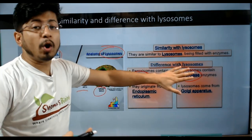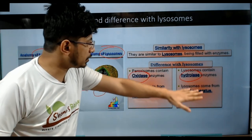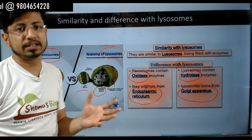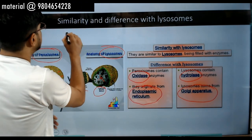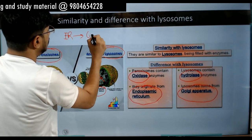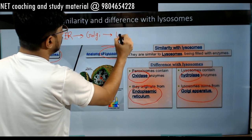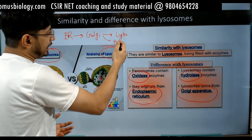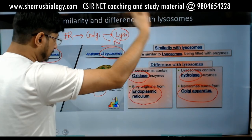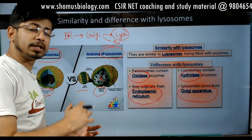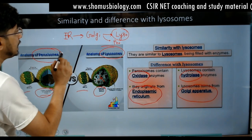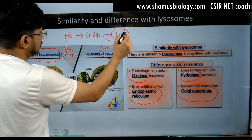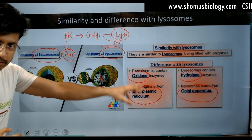One more thing is the origin of paroxysome and lysosome. Lysosome is originated from the Golgi apparatus, while paroxysome originated from the endoplasmic reticulum. If you look at the endomembrane system, we have endoplasmic reticulum, from there we have Golgi, and from there we have lysosome — produced as a maturation process through primary lysosome, primary endosome, then secondary endosome. Directly, paroxysome is produced from the ER and lysosome is produced from Golgi. This is the fundamental difference between lysosome and paroxysome.